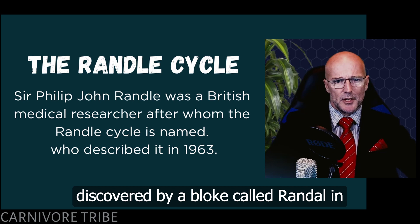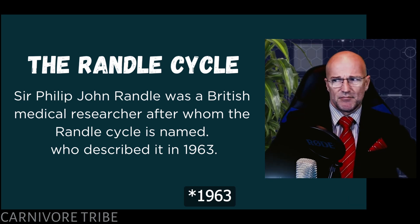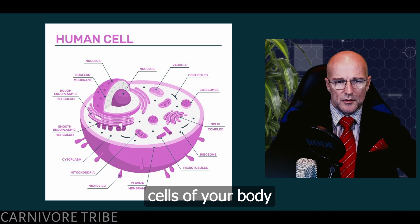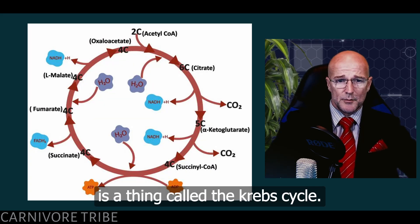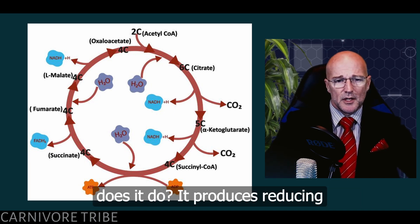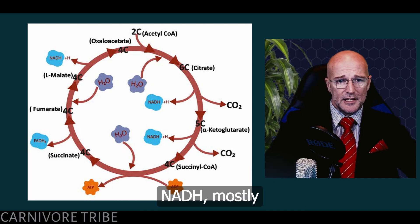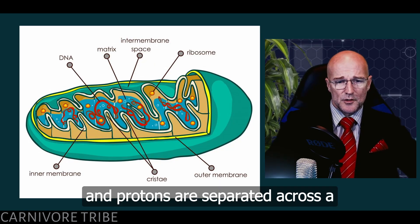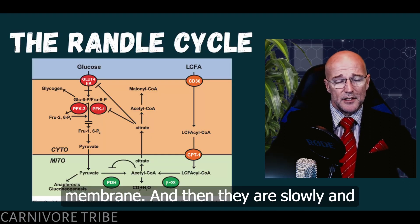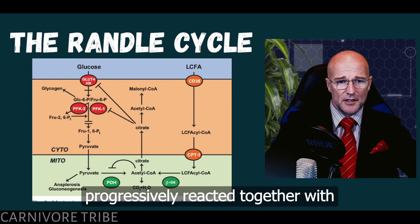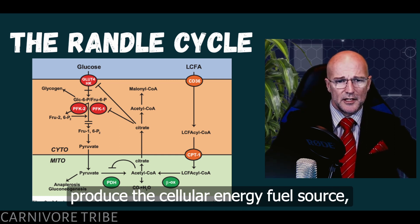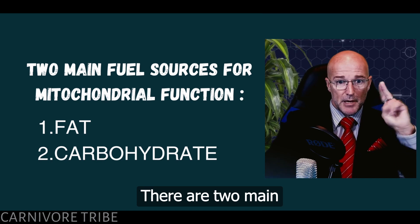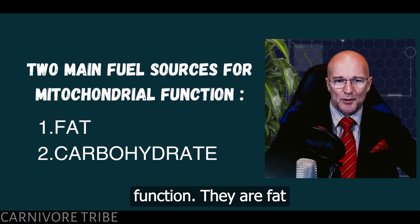The Randall cycle was discovered by a bloke called Randall in 1962. Inside the cells of your body is the Krebs cycle, sometimes called the TCA cycle. What it does is produce reducing equivalents in the form of NADH, which is delivered to the mitochondria where electrons and protons are separated across a membrane, slowly reacted with oxygen to produce energy — the cellular energy fuel source, ATP.